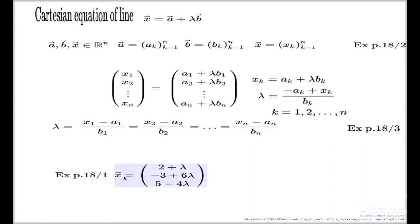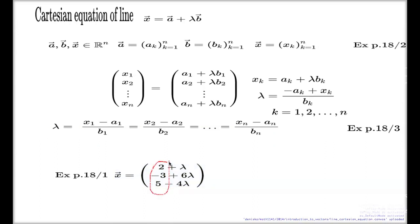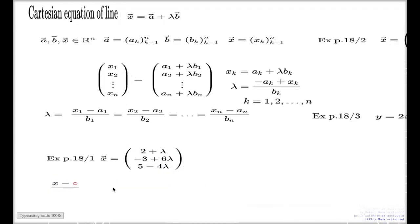Here's an example — the example we just did on the previous slide where we found the vector equation for the line. Page 18, example number 1. Having this in mind, I can convert this to Cartesian form straight away. All I have to do is take the a vector and put it in the numerators here, and take the coefficients next to lambda — 1, 6, and negative 4 — and put them at the bottom. Here it is: a double identity which is effectively the Cartesian equation of my line in three-dimensional space.